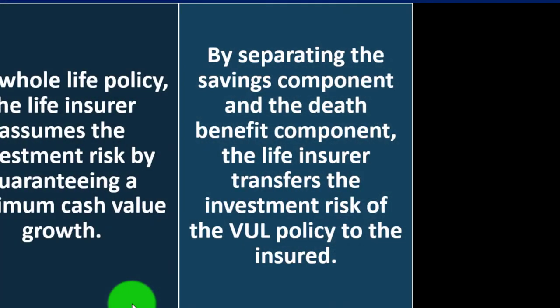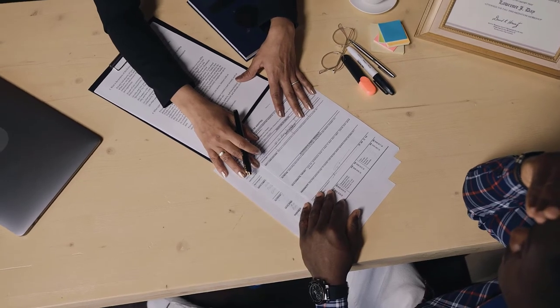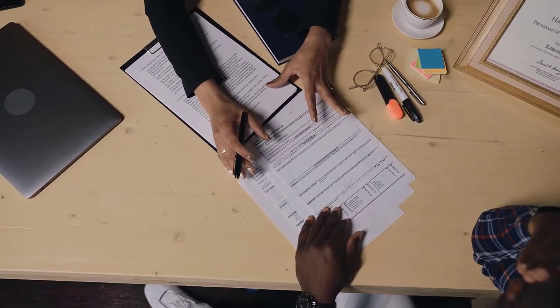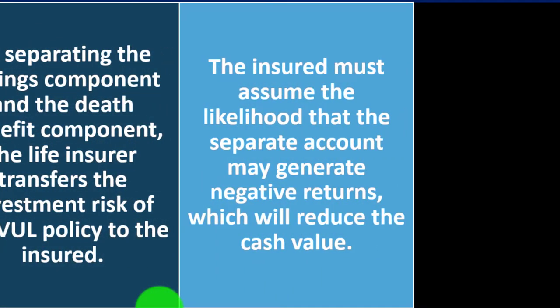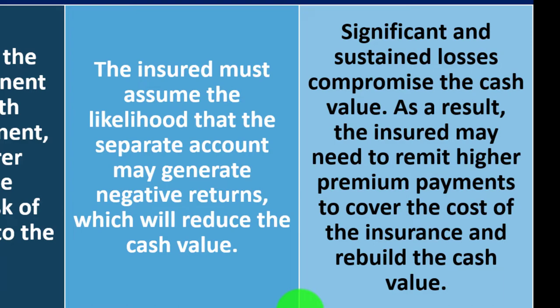In a whole life policy, the life insurer assumes the investment risk by guaranteeing a minimum cash value growth. By separating the savings component and the death benefit, the life insurer transfers the investment risk of the VUL policy to the insured — generally us. As you take on more risk, your potential for growth goes up with market fluctuations, but you also have the potential for loss. The insured must assume the likelihood that the separate account may generate negative returns, which will reduce the cash value.